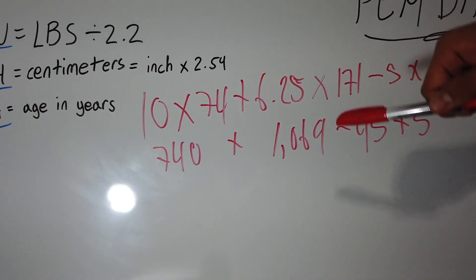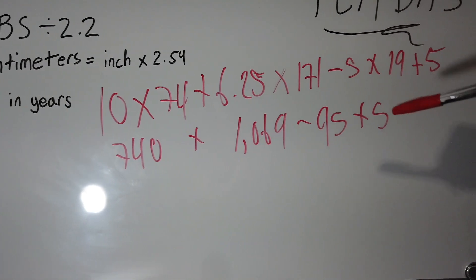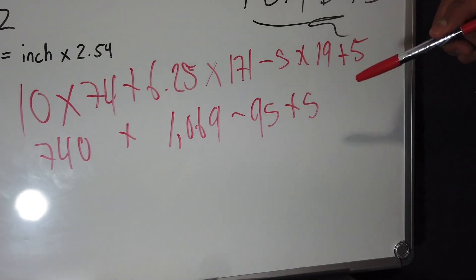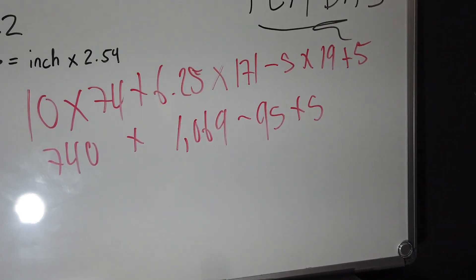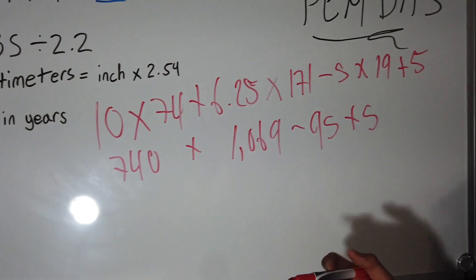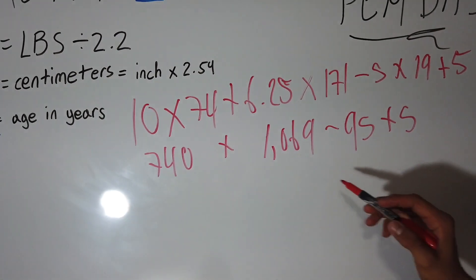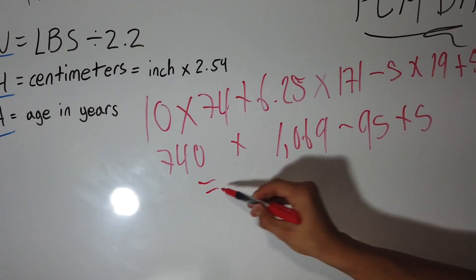So it's 740 plus 1069 minus 95 plus 5. So now this is where you get the last part of the equation. You just want to add everything up, so when you add all of this up it equals 1,719.